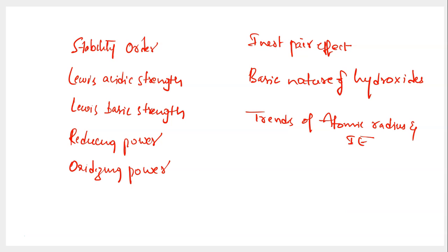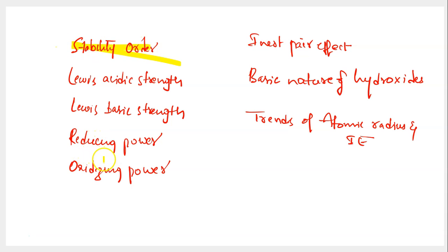Since we are talking about group 13 elements, first of all I would like to show you some topics which are very important from group 13 elements. These are the topics from where questions have appeared multiple times in various examinations. Let's take a look at the topic list. The first one is stability order. Questions related to stability order are very common, like which among the following compounds is highly thermally stable, or write the stability order, or identify the decreasing order of stability. This kind of questions are quite commonly framed from group 13 elements and other group elements also.